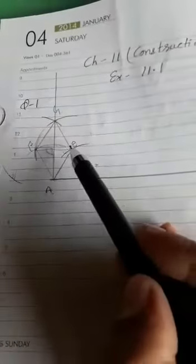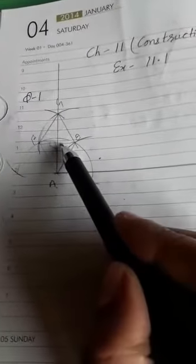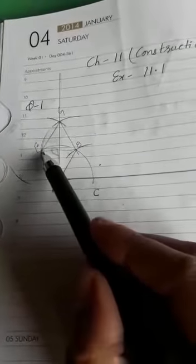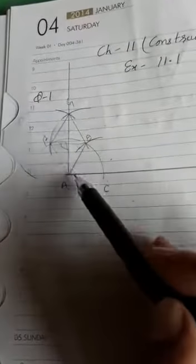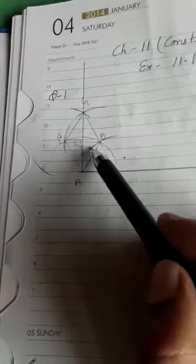Now as this angle EAC is 60 degrees and this angle is also 60 degrees. Why? Because here see AF, AE, and EF, all are equal. This is an equilateral triangle. So each angle is 60 degrees. It means this angle AEF is 60 and angle EAC is also 60.